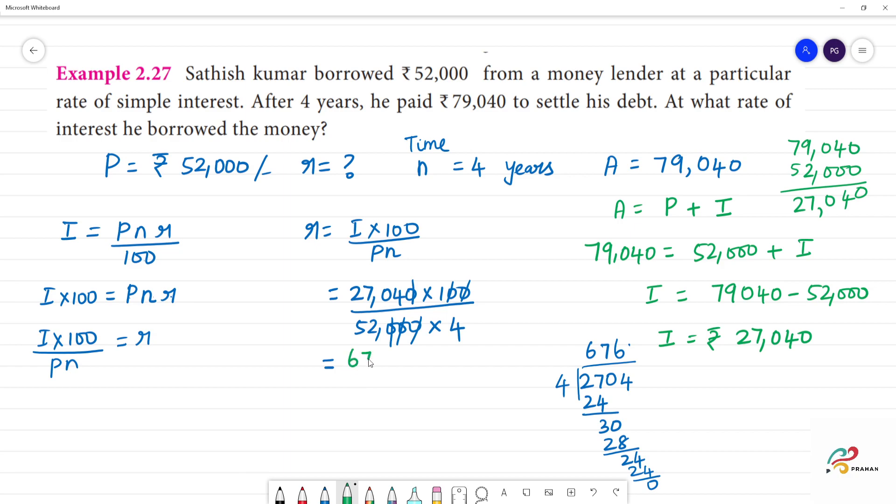Now, 676 divided by 52. 1 times 52 is 52. We have 156. 3 times 52 is 156. That is equal to 13 percentage. Rate of interest is equal to 13 percent.